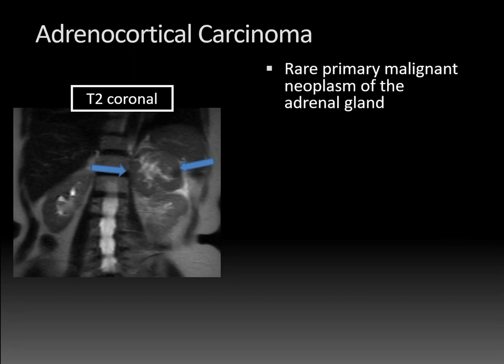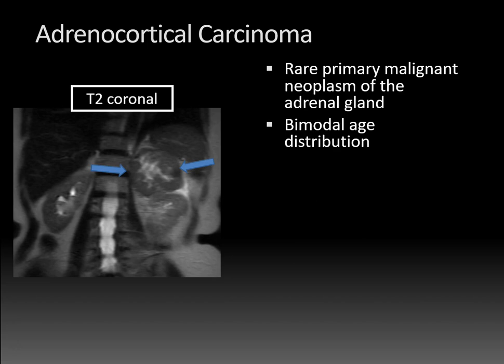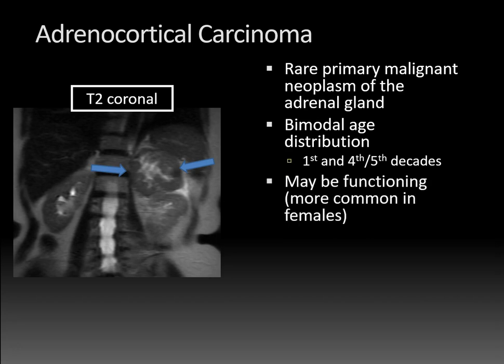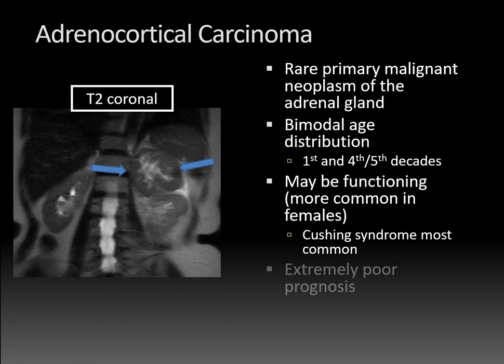Adrenocortical carcinomas are rare primary malignant neoplasms of the adrenal gland with a bimodal age distribution — presenting in the first decade of life in children and the fourth to fifth decades in adults. These tumors may be functioning, particularly in female patients, meaning they can secrete hormones. When they do, Cushing syndrome — as opposed to Conn syndrome — is the most common presentation. Unfortunately, they have an extremely poor prognosis.